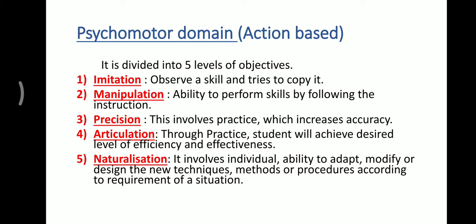The third level is precision — practice which increases accuracy. The student practices repeatedly to increase accuracy. The fourth level is articulation — through practice, the student achieves the desired level of efficiency and effectiveness. The fifth level is naturalization — the individual ability to adapt, modify, or design new techniques, methods, or procedures according to the requirement of a situation. The student can now perform the skill without thinking, having practiced so much that it is done flawlessly.